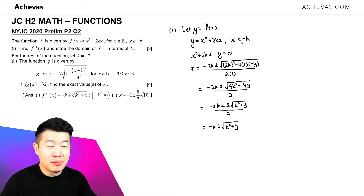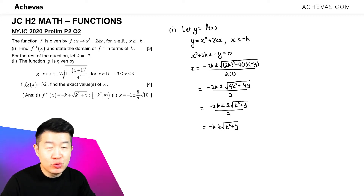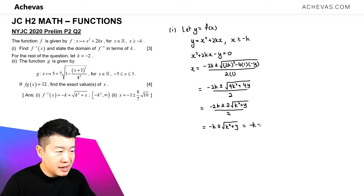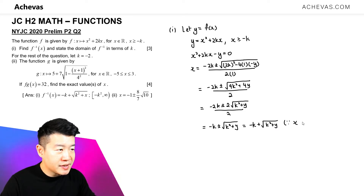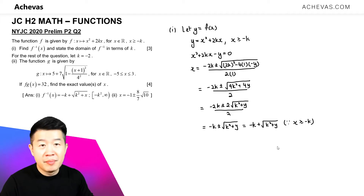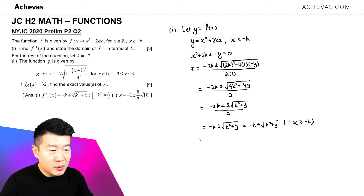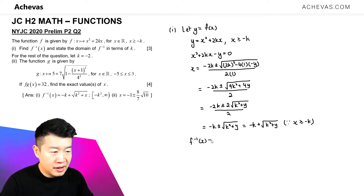Since this equation works for x bigger or equal to minus k, minus k plus minus k — I'm going to choose plus so that x can be bigger than minus k. So this gives us x equals minus k plus square root of k squared plus y. This is because x is supposed to be bigger or equal to minus k. This gives us the expression for f inverse, so f⁻¹(x) = minus k plus square root of k squared plus x.